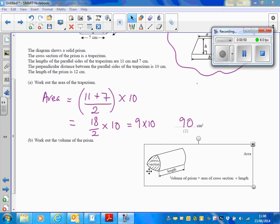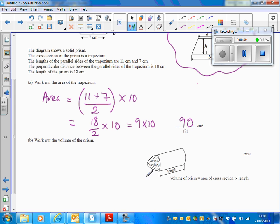OK, the second part of the question asks you to find the volume of the prism. And again, in the front of your exam paper you've got the formula here. The volume of a prism is equal to the area of the cross-section - that's the part on the end - multiplied by the length.